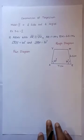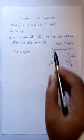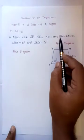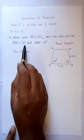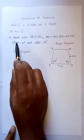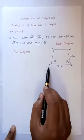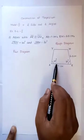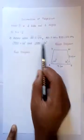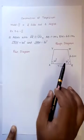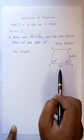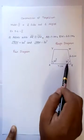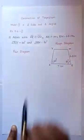2nd Roman, 3rd Question. The given measurements are: Line segment AR parallel to line segment YM, AR equal to 7 cm, RM equal to 6.5 cm, Angle RAY equal to 100 degrees, and Angle ARM equal to 60 degrees. Trapezium has one pair of parallel sides. Drop a rough diagram: AR = 7 cm, RM = 6.5, Angle A = 100 degrees, Angle R = 60 degrees.